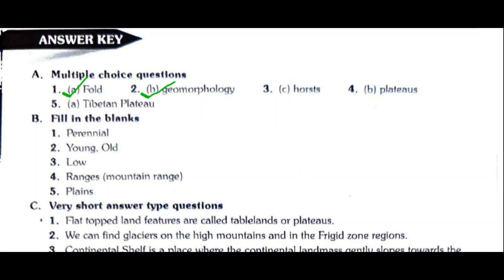Question number 3: The uplifted blocks of block mountain are called — Option C: Horst. Question number 4: An elevated area of leveled table land is called a plateau. This is called the roof of the world — that is the Tibetan Plateau. Option A: Tibetan Plateau.